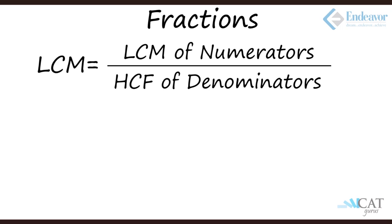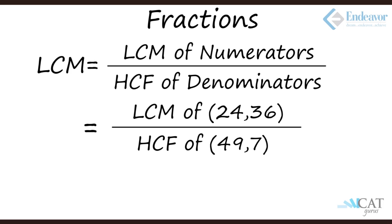Now if suppose we are asked LCM, then what we need to do is find the LCM of the numerators and for the denominators do the opposite which is HCF. So LCM of the numerators and HCF of the denominators. So what do we do here? LCM of the numerators which is 24 and 36. So 24 is nothing but 8 into 3 and 36 is 9 into 4. So the LCM is 72 whereas the HCF of 49 and 7 is 7 because one is 7 to the power 2 and the other is 7 to the power 1.